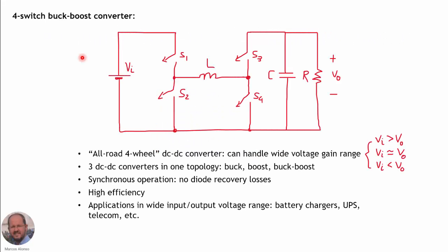This is the schematic of the four-switch buck-boost converter. We have the input voltage, a branch at this point, then the inductor, another branch, and then the output with the filter capacitor and the load. This is a really interesting converter for many applications.